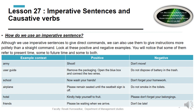User guide — instructions from the person guiding us: 'Remove the packaging, open the blue box, and connect the two right wires.' Negative instruction: 'Do not dispose of battery in the trash.' So instructions can be polite, straightforward, and positive. Commands can be given in positive as well as negative form. School example — 'Wash your hands' is a command.